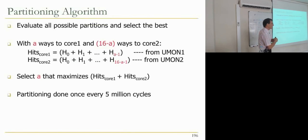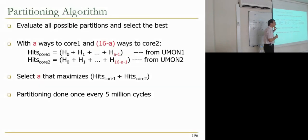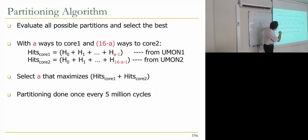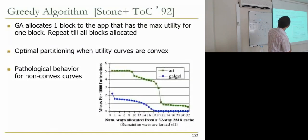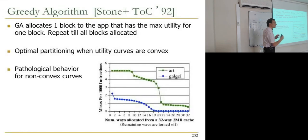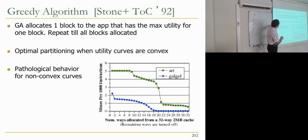Non-convex curves were observed and examples exist in the paper — this is Moindig-Reishi's work. The greedy algorithm is not scalable as the number of cores increases because searching all A values becomes exponential. One potential solution is Harold Stone's algorithm from IBM for memory partitioning: allocate one block to the application with maximum utility for that block, using a lookahead of one. This gives optimal partitioning when utility curves are convex, but produces pathological behavior for non-convex curves.